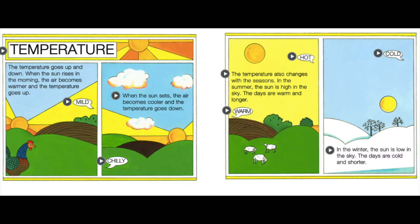The temperature also changes with the seasons. In the summer, the sun is high in the sky. The days are warm and longer. In the winter, the sun is low in the sky. The days are cold and shorter.